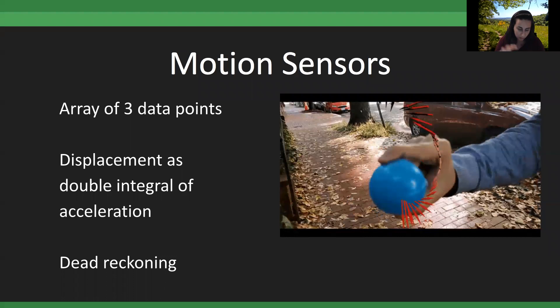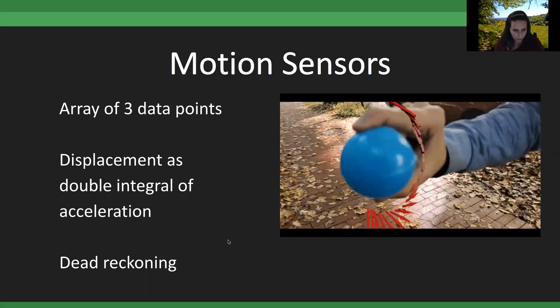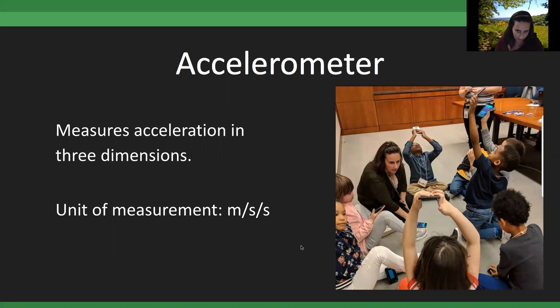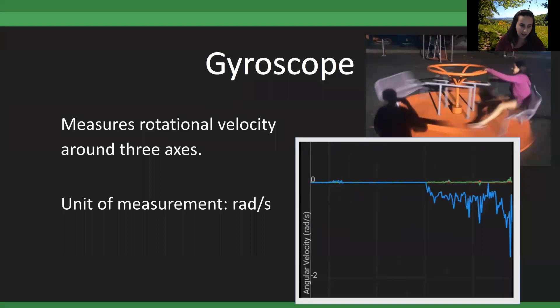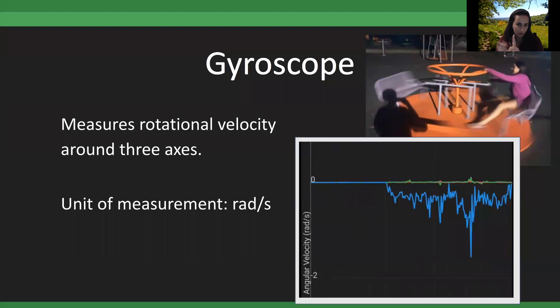Despite its limitations, the accelerometer is probably the most popular sensor because there's so much information you can get from it. I love using it with students because acceleration is a difficult concept for them to grasp. The gyroscope is more understandable — it's measured in three dimensions, looking at rotation around the x, y, and z axes rather than along them.